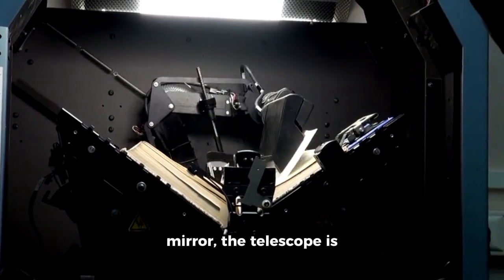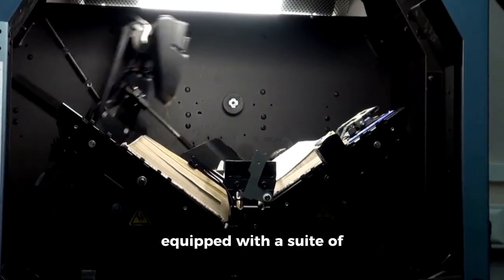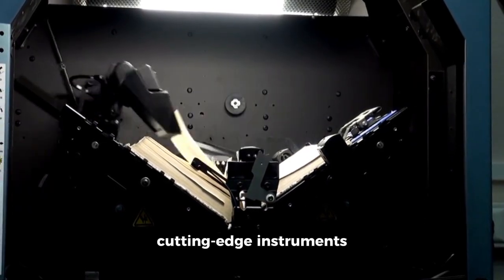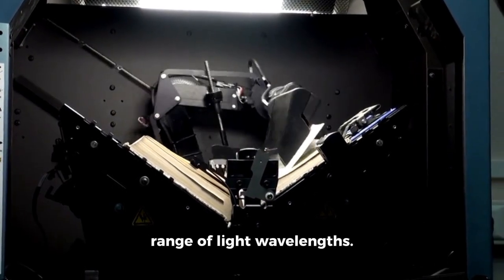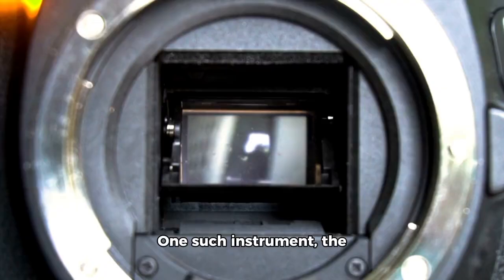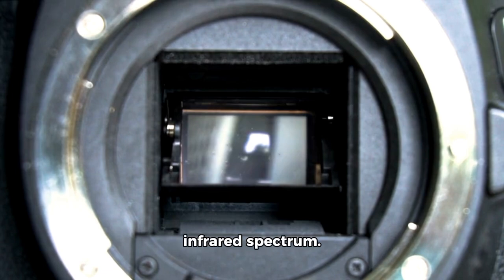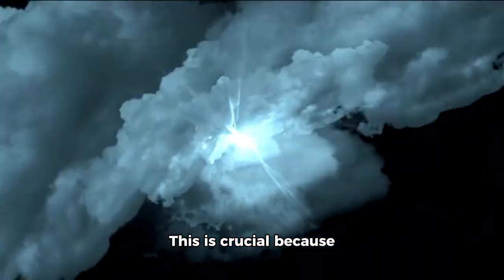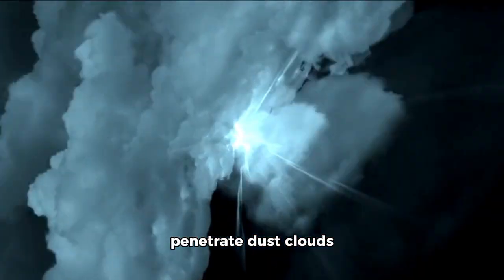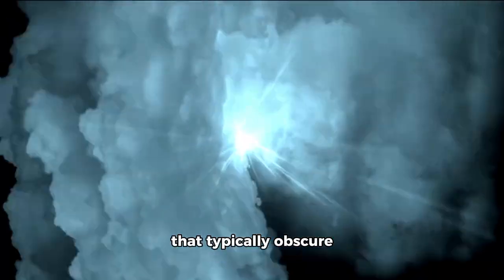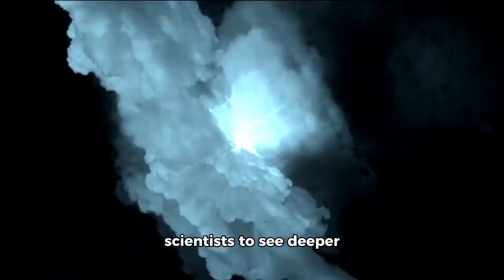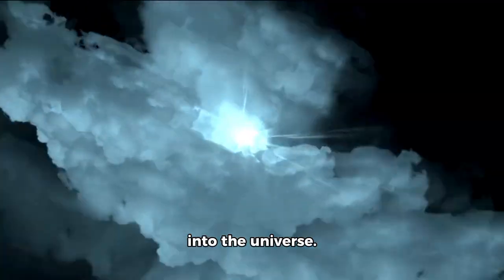In addition to its large mirror, the telescope is equipped with a suite of cutting-edge instruments capable of detecting a wide range of light wavelengths. One such instrument, the Near-Infrared Camera NearCam, is designed to capture images in the infrared spectrum. This is crucial because infrared light can penetrate dust clouds that typically obscure visible light, allowing scientists to see deeper into the universe.